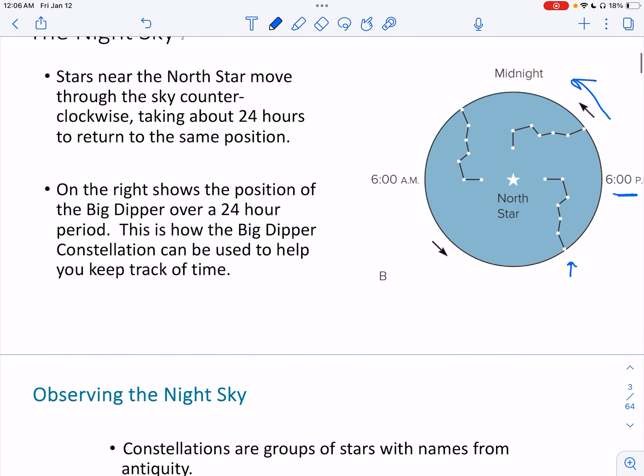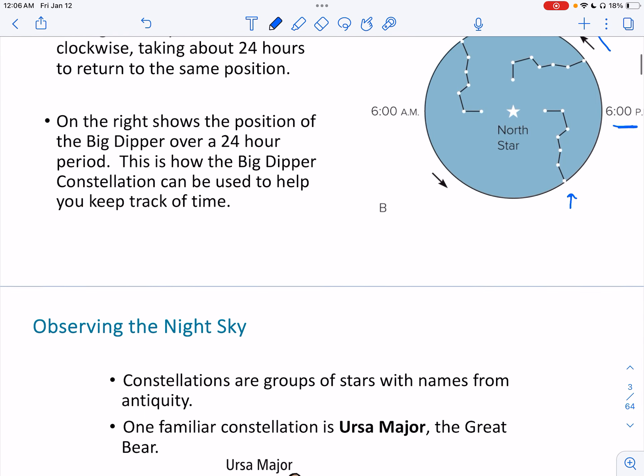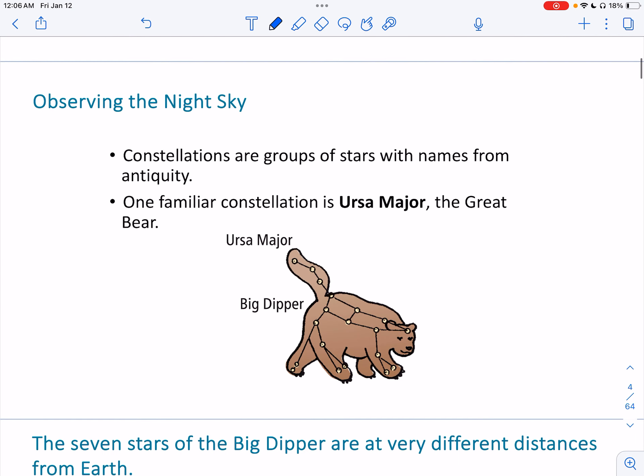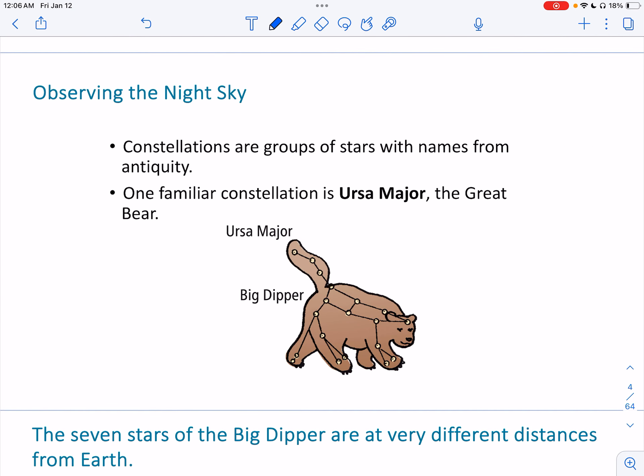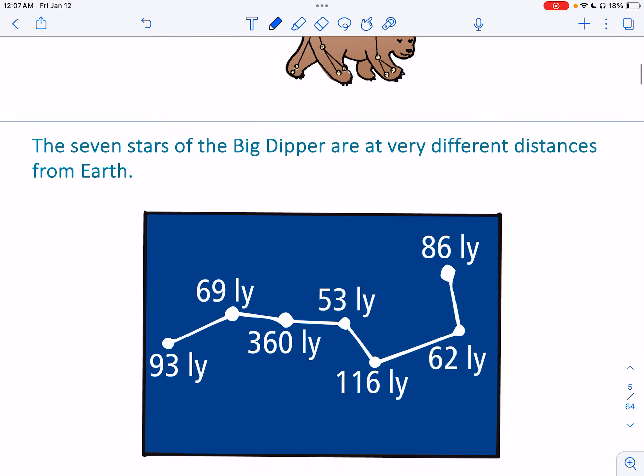So constellations can be used to help you keep track of time. Again, constellations are a group of stars with names that are ancient. One familiar constellation is Ursa Major. It's called that because it's a bear.